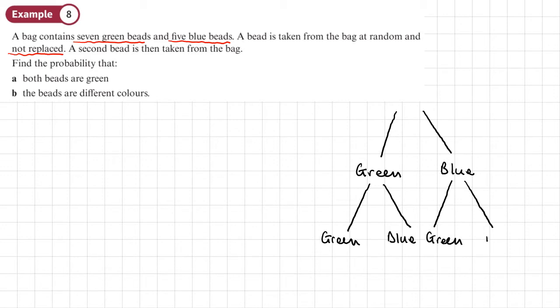So we'll just put these in and now we'll put in the probabilities. So we start with seven green and five blue. Now I know altogether then that there's going to be five, seven plus five, 12 beads.